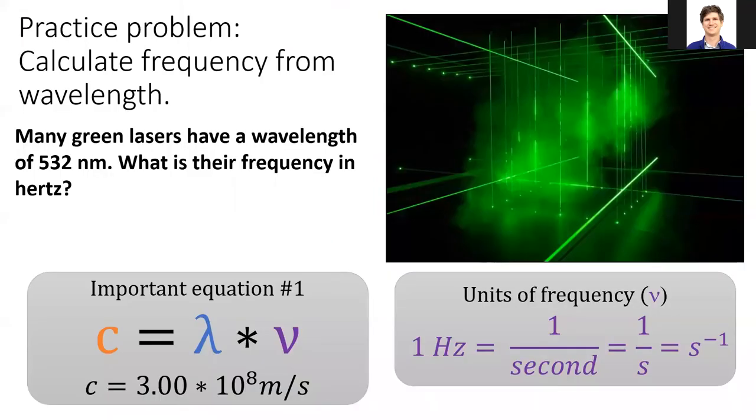All right, time to practice using important equation number one. The common neodymium YAG laser is often tuned to an output of 532 nanometers, which is a bright green. What is this laser's frequency? Pause the video, give it a try.